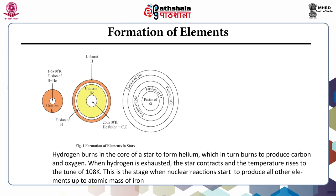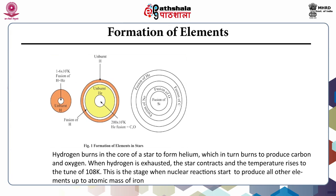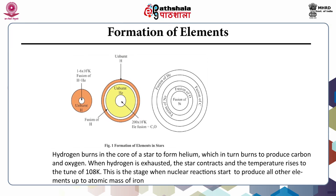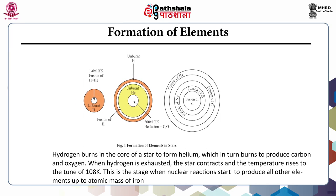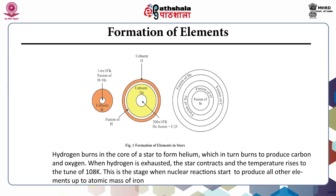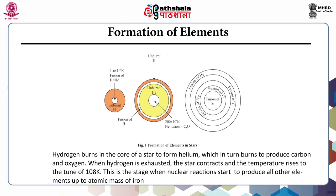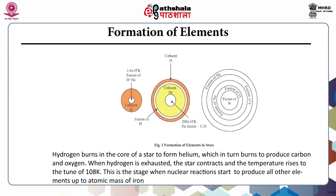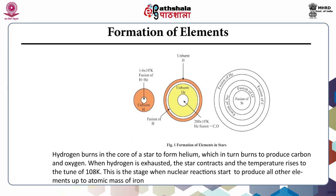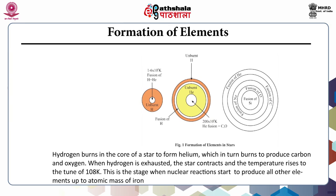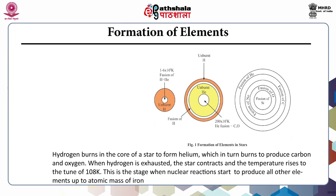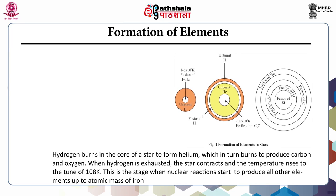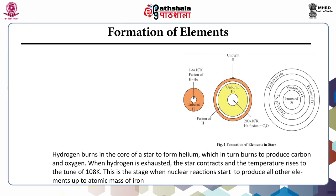This figure shows the formation of elements in stars. Hydrogen burns in the core of a star to form helium, which in turn burns to produce carbon and oxygen. When hydrogen is exhausted, the star contracts and the temperature rises to the tune of 10 to the power 8 Kelvin. This is the stage when nuclear reactions start to produce all other elements up to the atomic mass of iron.